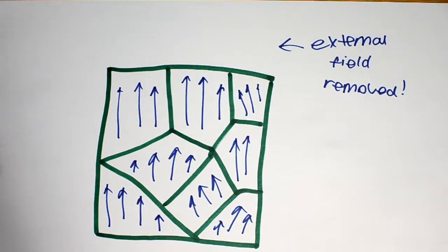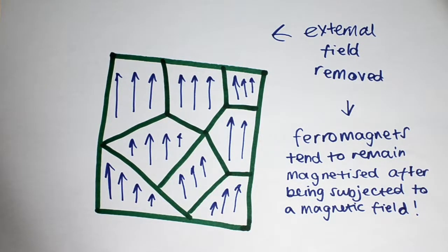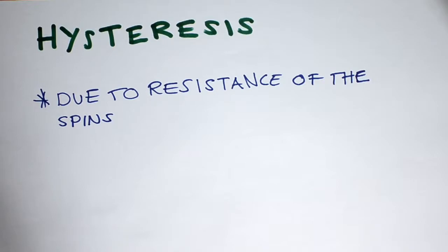Ferromagnetic materials tend to stay magnetised after being subjected to an external magnetic field. This tendency to remember the magnetic history is called hysteresis.